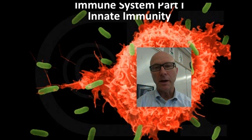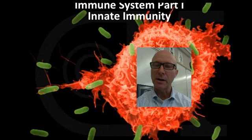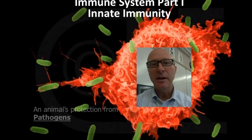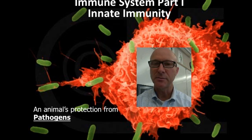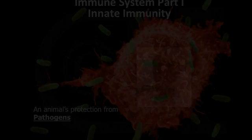Hello folks and welcome to a video lecture on the immune system. Although not listed as one of the 11 systems of the human body, it is quite complex and fascinating to study. Its function is independent of the nervous system and the endocrine systems of the body. Simply stated, it's an animal's protection against pathogens that would cause disease. This video is part one of the immune system, in which we'll discuss innate immunity. Part two will discuss adaptive or acquired immunity.